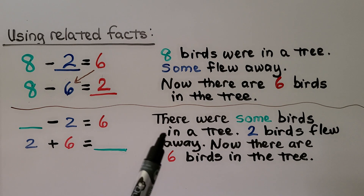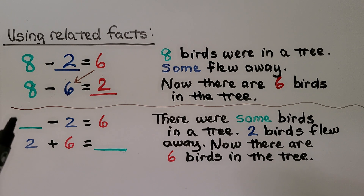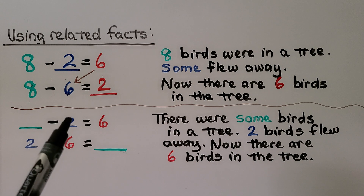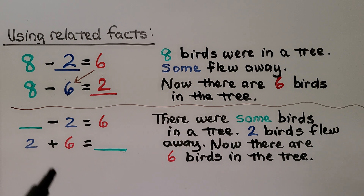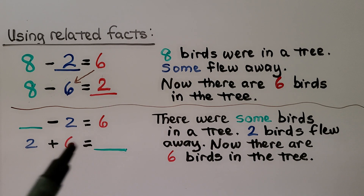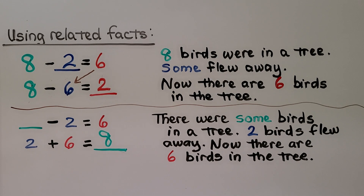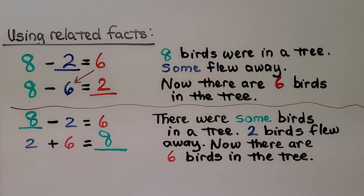Here it says there were some birds — we don't know how many — in a tree. Two birds flew away; now there are six birds in the tree. We can think of a related addition sentence: two plus six is equal to eight. That means eight minus two is equal to six. Keep in mind we can use related facts, and it doesn't matter how great the numbers are — the numbers can be any amount.